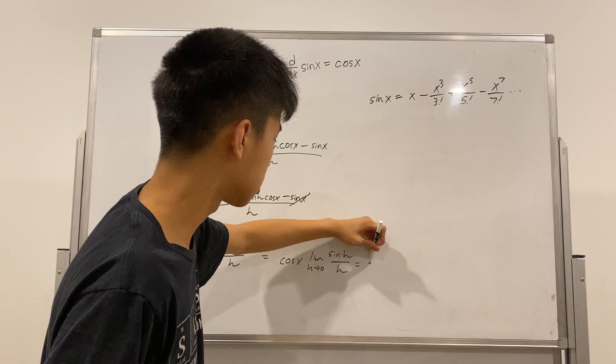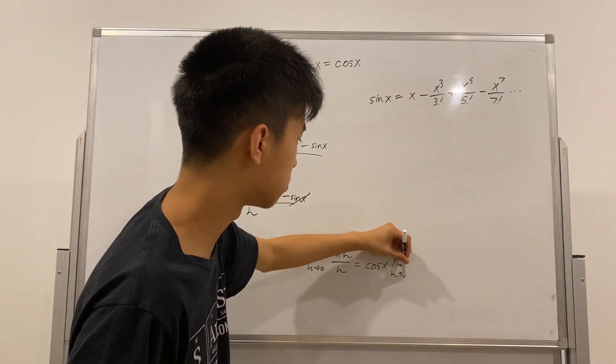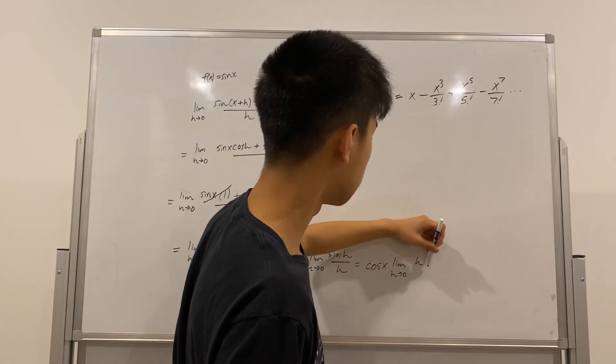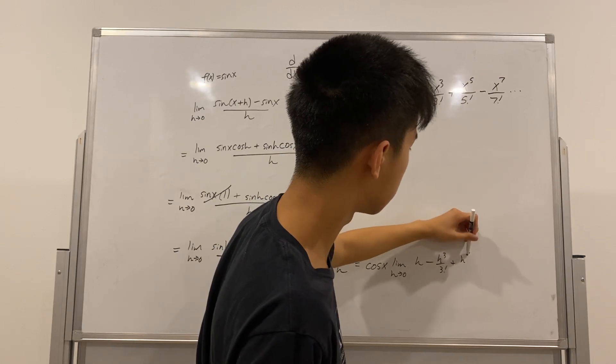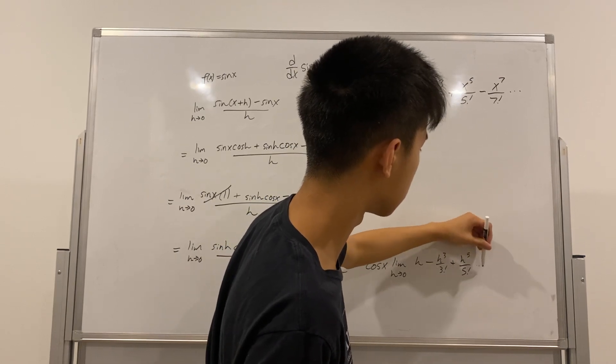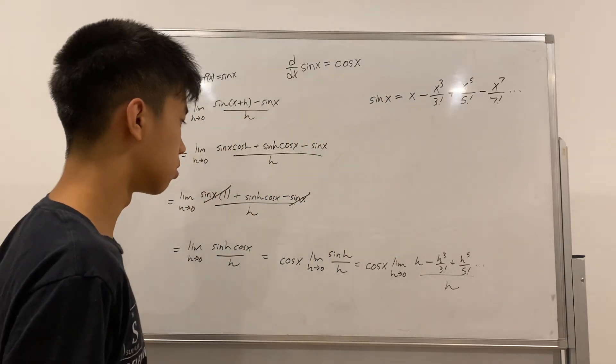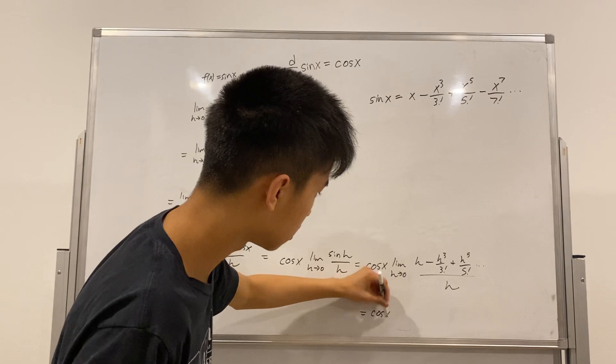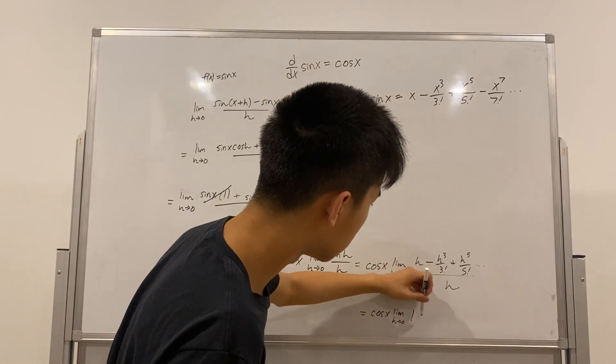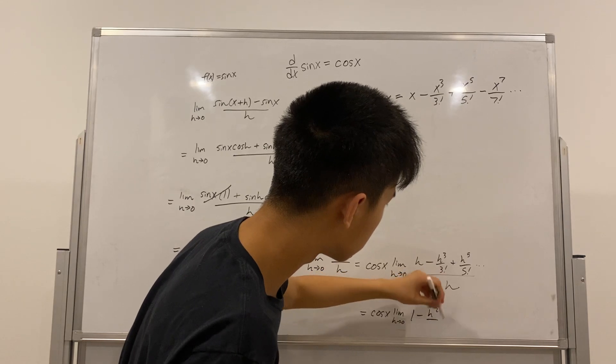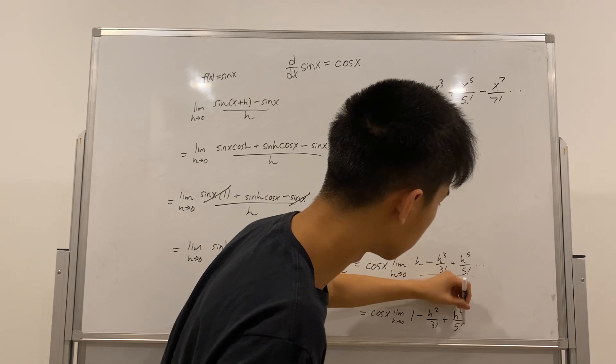So, now we have cosine x limit as h approaches 0 of Taylor series h minus h cubed over 3 factorial plus h fifth over 5 factorial dot dot dot over h. So, that's equal to cosine of x limit of h infinity 1 minus h squared over 3 factorial plus h to the 4th over 5 factorial and so on.